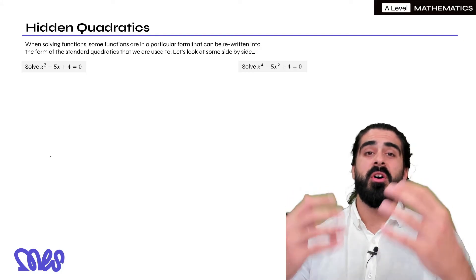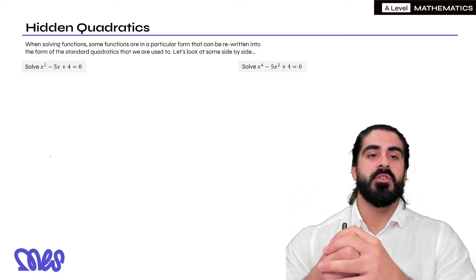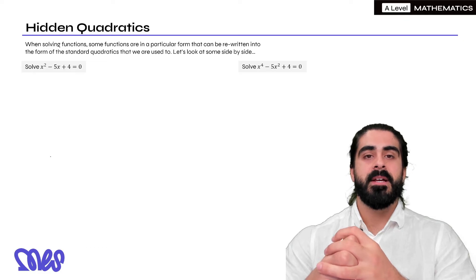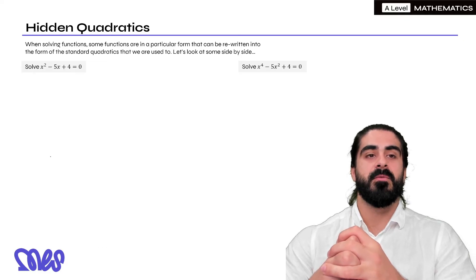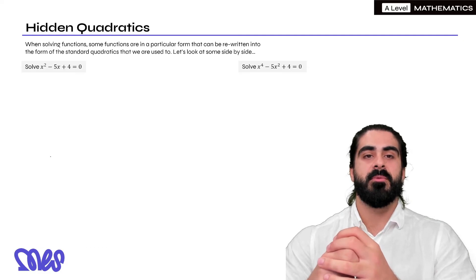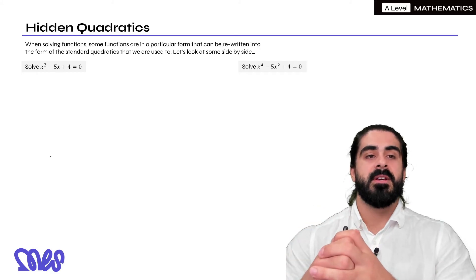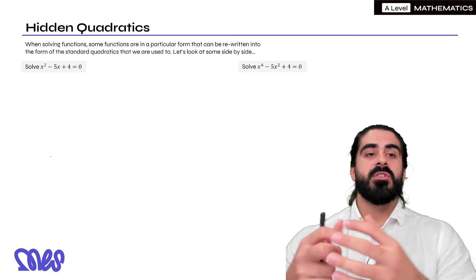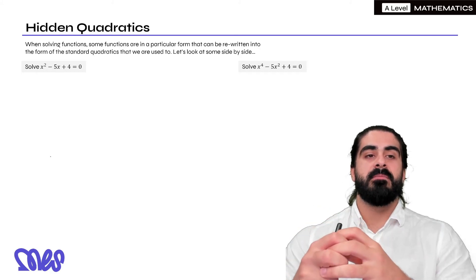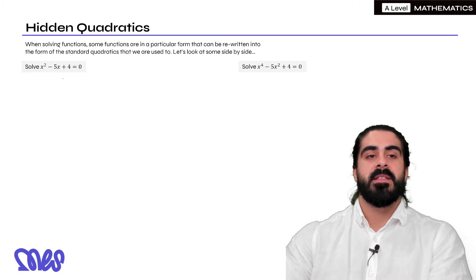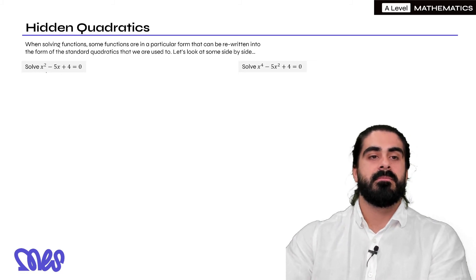So what are hidden quadratics? When solving functions, some functions are in a particular form that can be rewritten into the form of the standard quadratics that we're used to. Let's look at some side by side. So if we were to solve x squared minus 5x plus 4 equals 0, that's a very standard basic question.